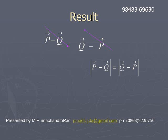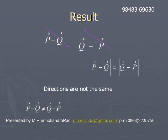If the vector is represented between two vertical lines, it represents the magnitude of the vector. So the magnitude of p̄ minus q̄ equals the magnitude of q̄ minus p̄, but the directions are not equal, hence they are not equal vectors, though their magnitudes are equal.